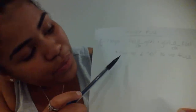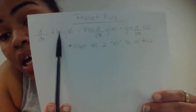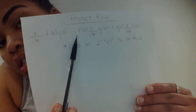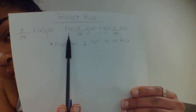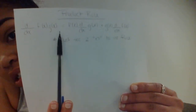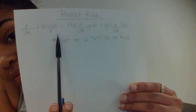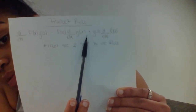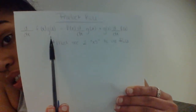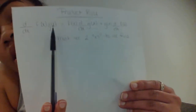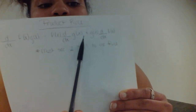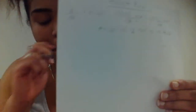Next we have the product rule, which is pretty much as simple as the quotient rule. You use the product rule when you have two x's multiplying across from each other. You take the first function f of x times the derivative of the second function, plus the second function g of x times the derivative of the first function. Use that when you see at least two x's across from each other.